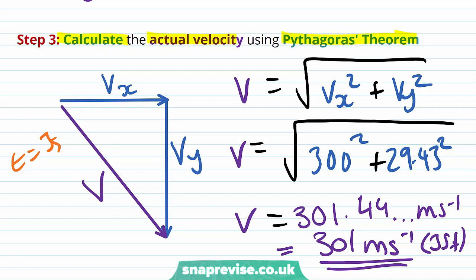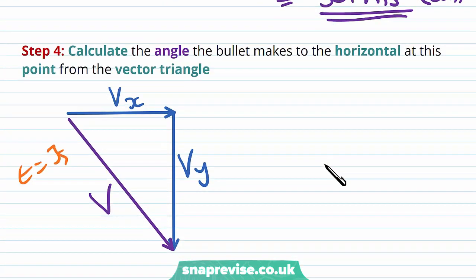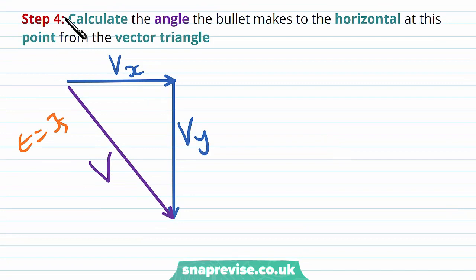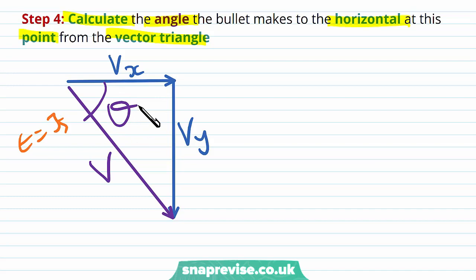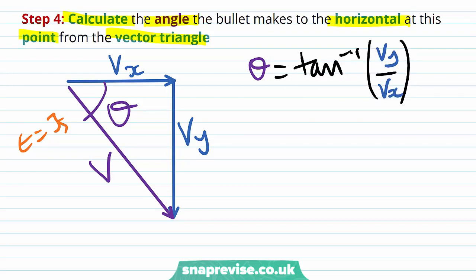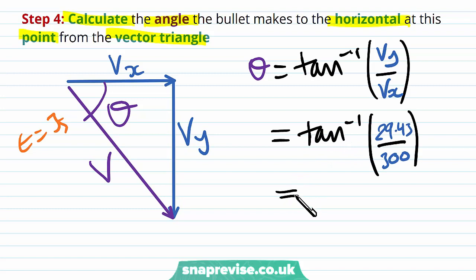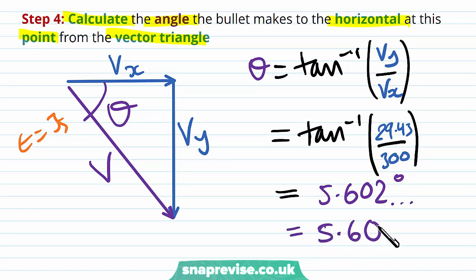This leads us to our last step: calculate the angle the bullet makes to the horizontal from the vector triangle. We want to find theta, so theta equals tan to the minus 1 of vy over vx. Substituting in our values for vy and vx, this gives us an angle of 5.602 degrees, which to three significant figures is 5.60 degrees.